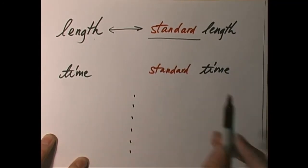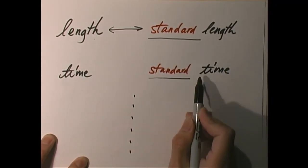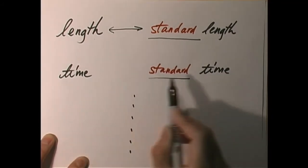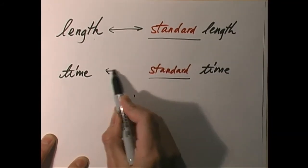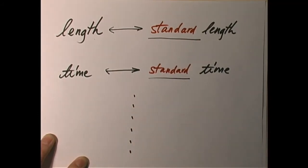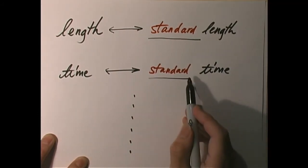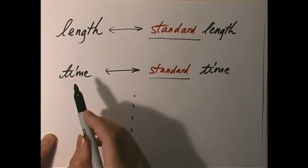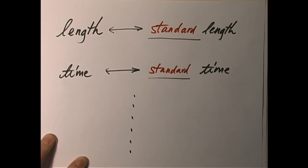To measure time, again, we must establish a standard time — the unit of time that everybody agrees on — and then to measure our time, we simply compare our time with the standard time. We get a number that we can report. For example, if the standard time is one second and our time is 10 seconds — in other words, it's 10 times as long as the standard of one second — then we say our measurement of time is 10 seconds, so everybody knows what we're talking about.